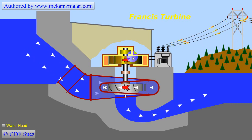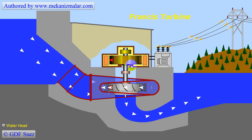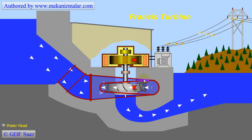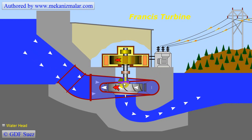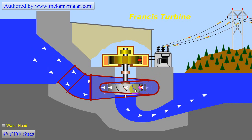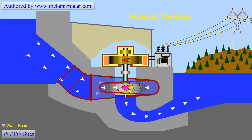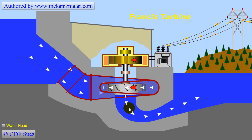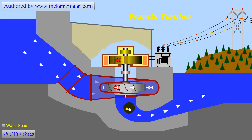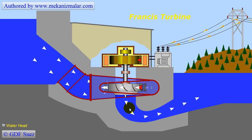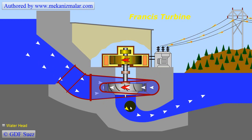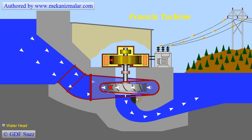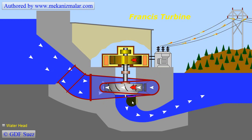One big advantage of water turbines is that power output can be regulated very easily. If the demand is reduced, the amount of water flowing to the turbine can be reduced in a relatively short period of time.